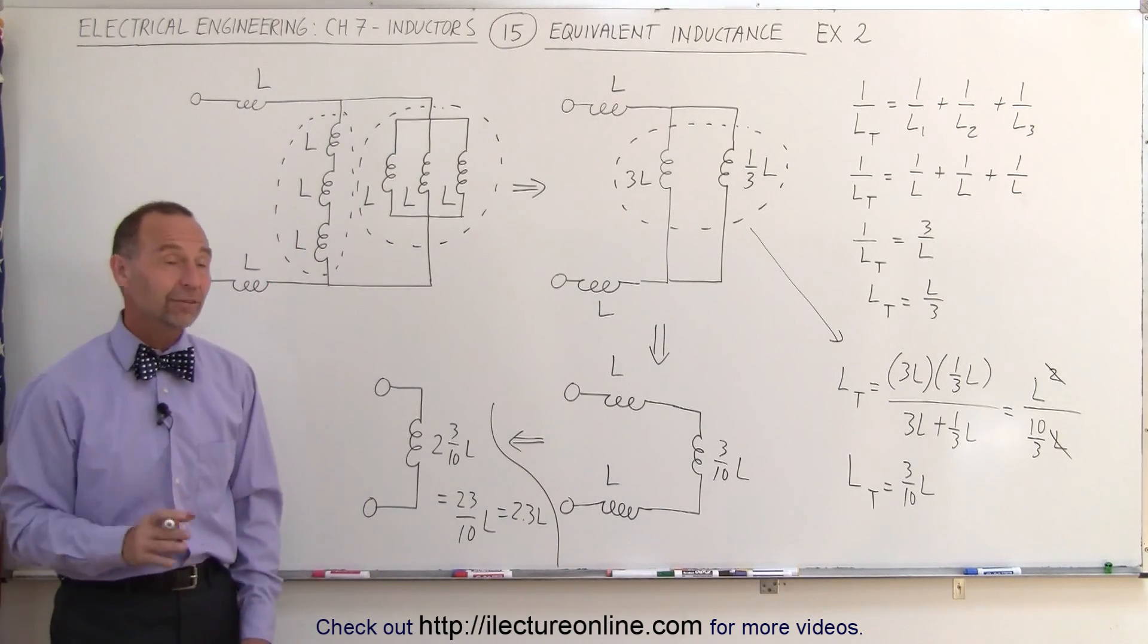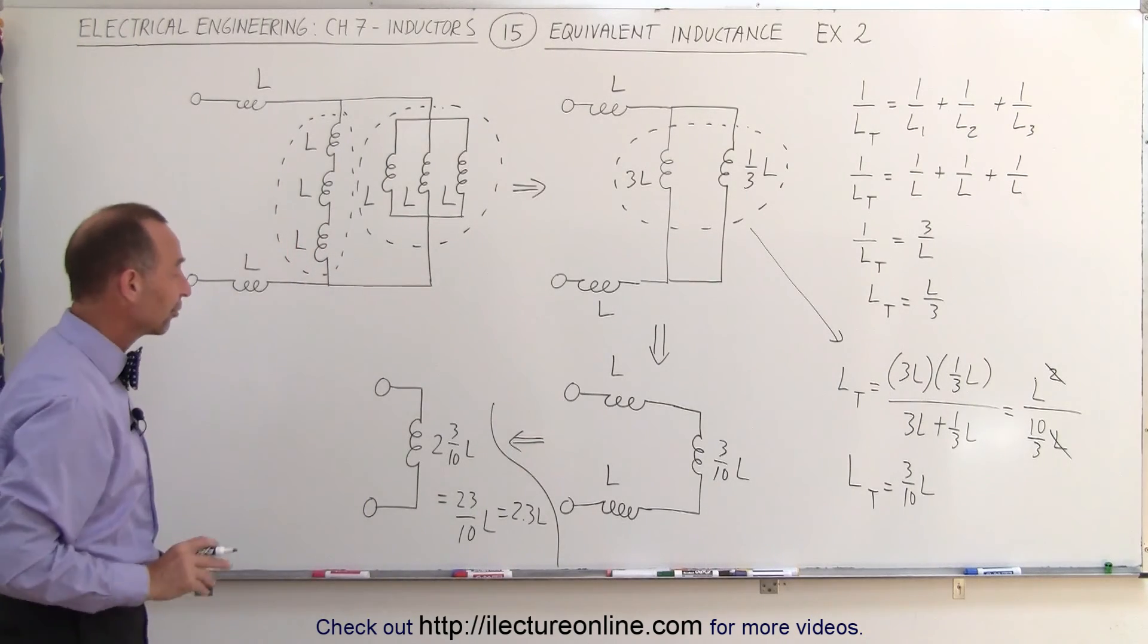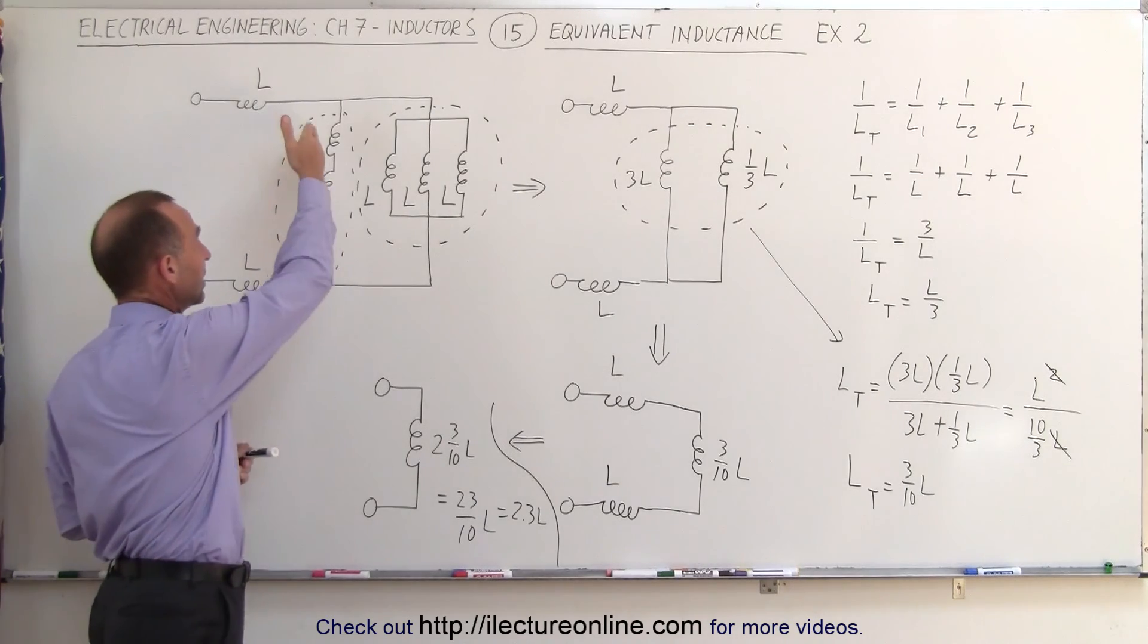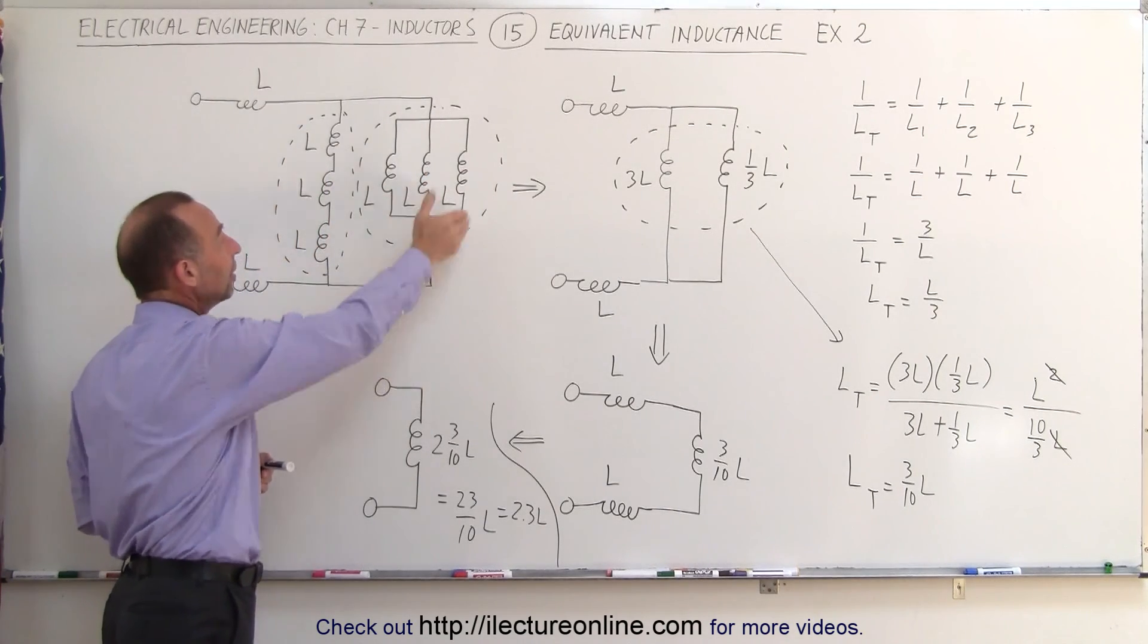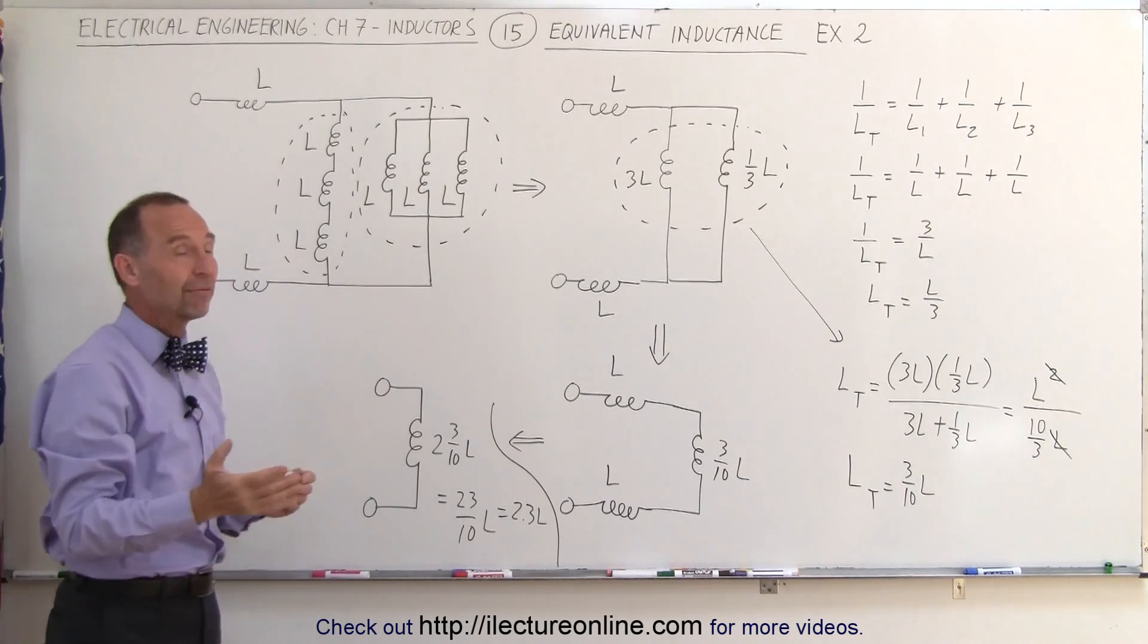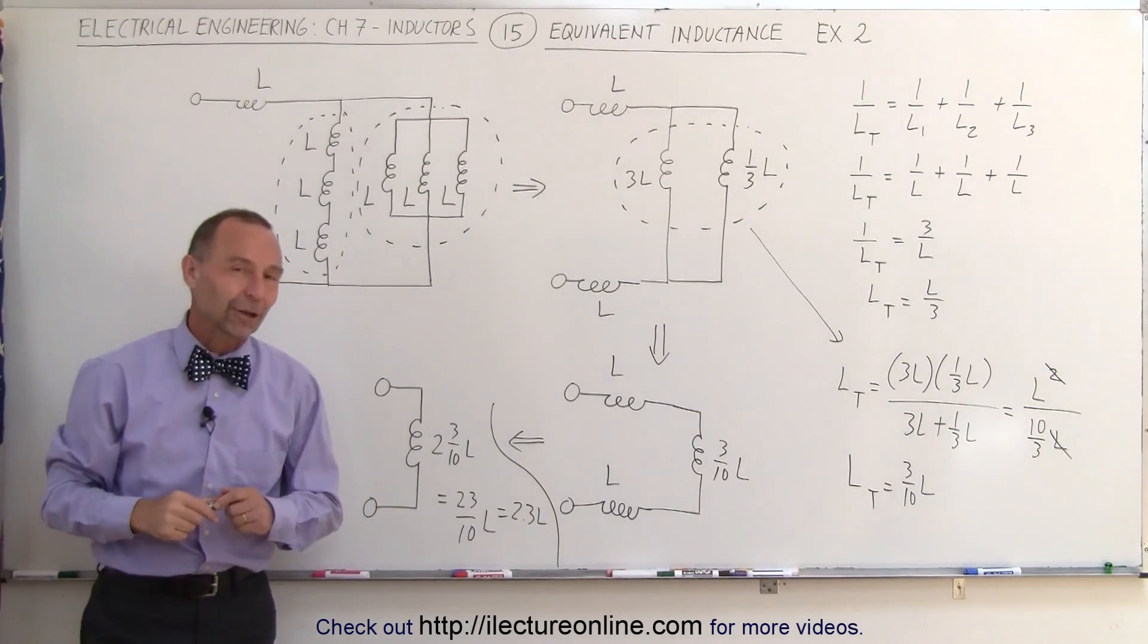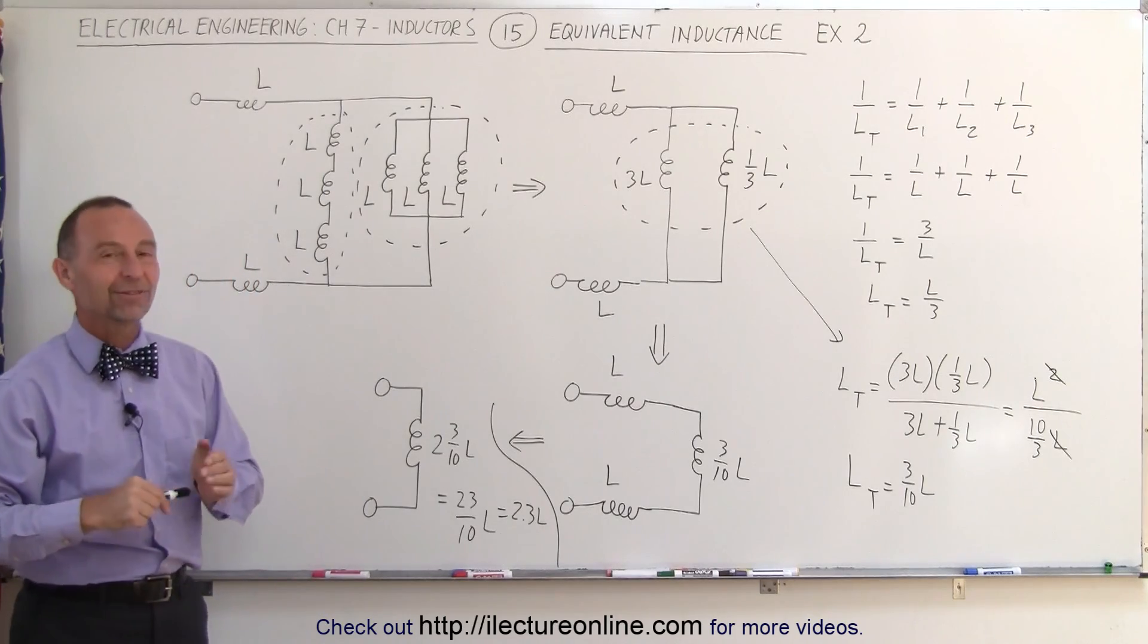There we go. And that's the equivalent inductance of our original circuit. Again, we chose this particular one, so you can see that when you have three in series, you simply add them together. When you have three in parallel, they're all the same value. The equivalent of three in parallel is simply one third the inductance of any one of them.